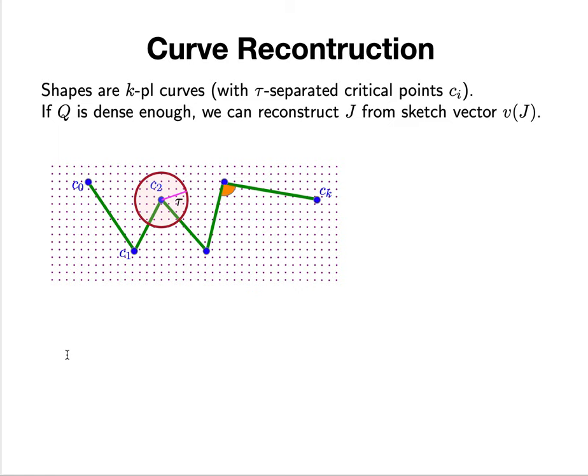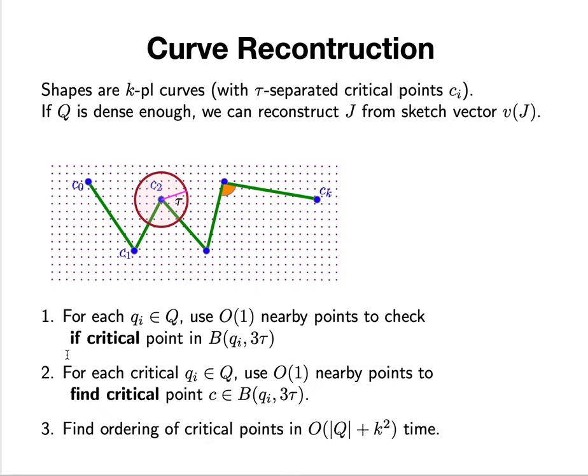If it doubles back on itself or there's ambiguity in the connectivity, we don't want to deal with that. If Q is sufficiently dense, like a sufficiently dense grid, then we can actually reconstruct the shape from just the sketch vector exactly.